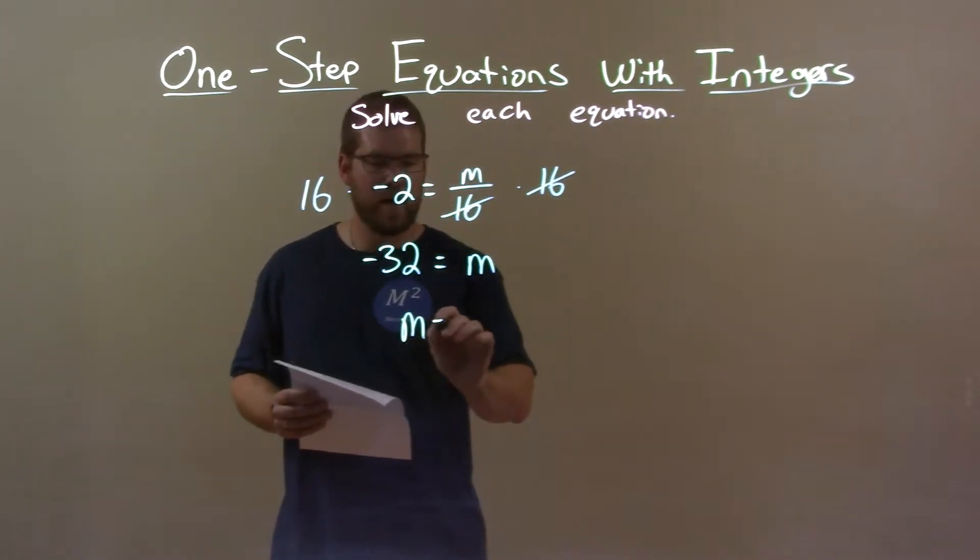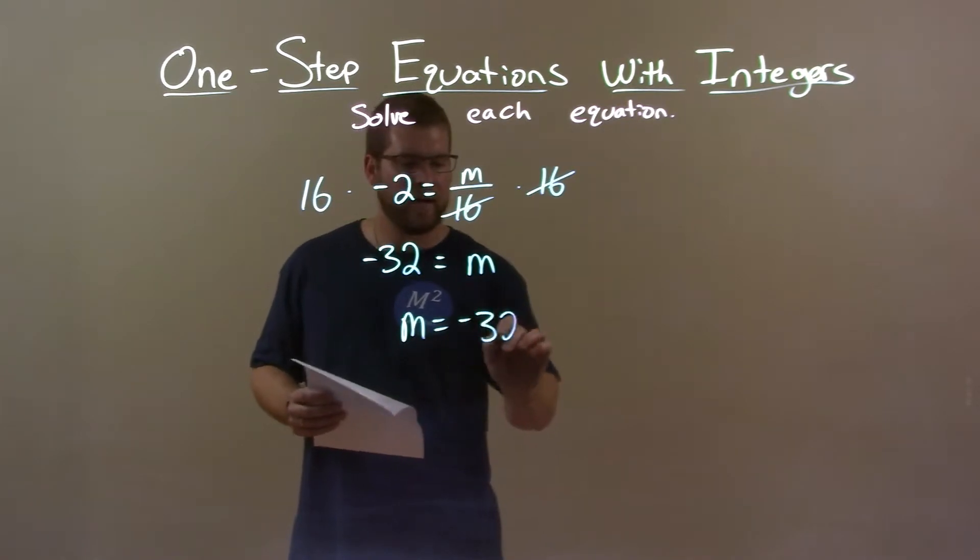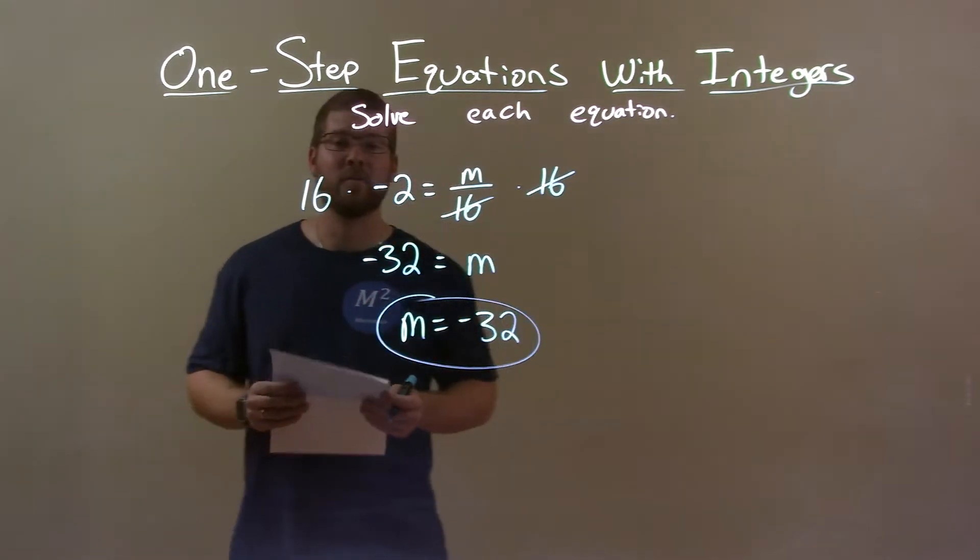I can rearrange it to have m come first. And I have a final answer of m equals negative 32.